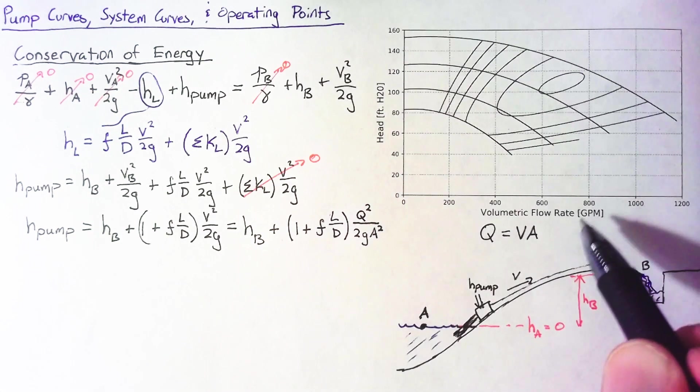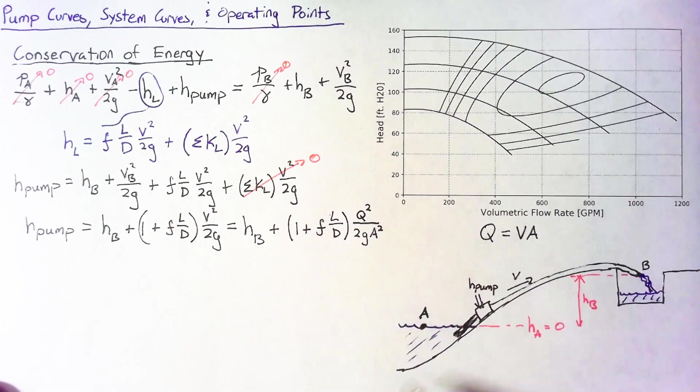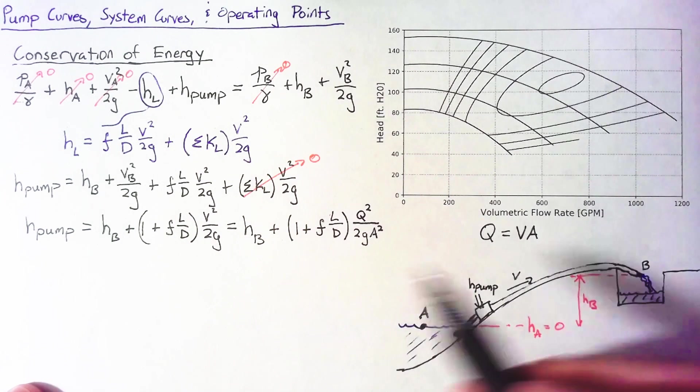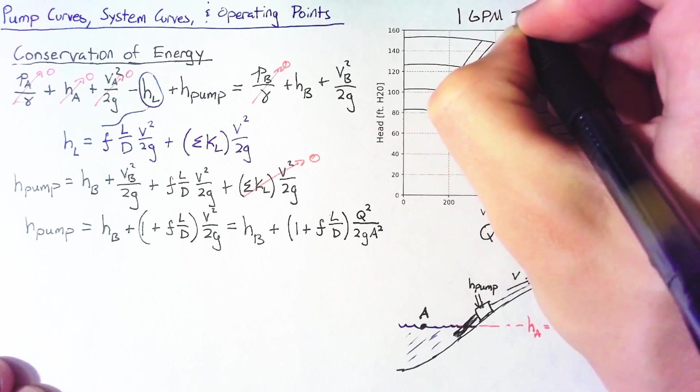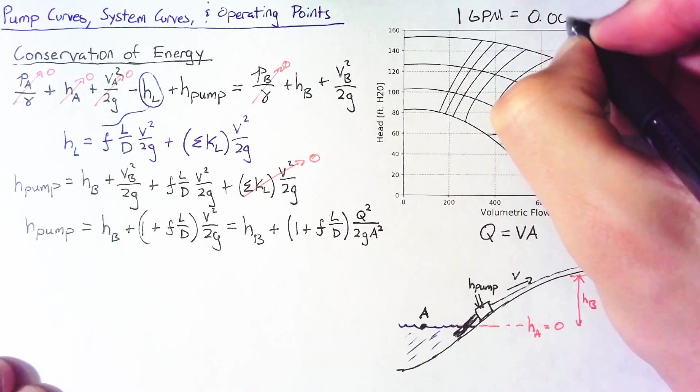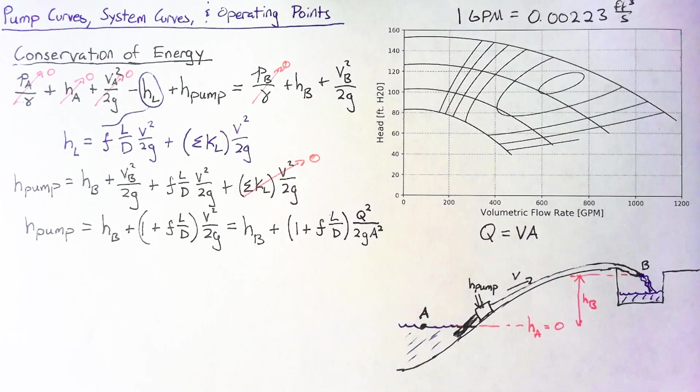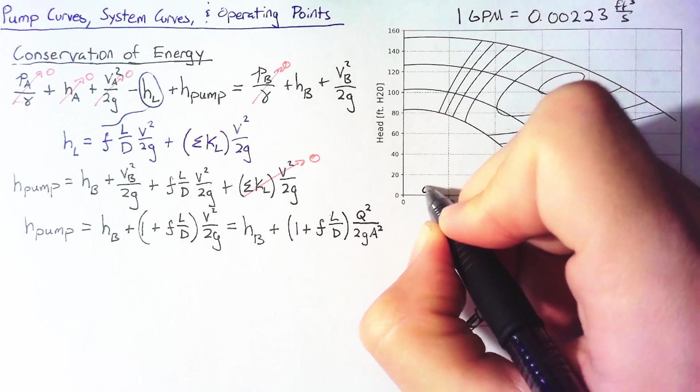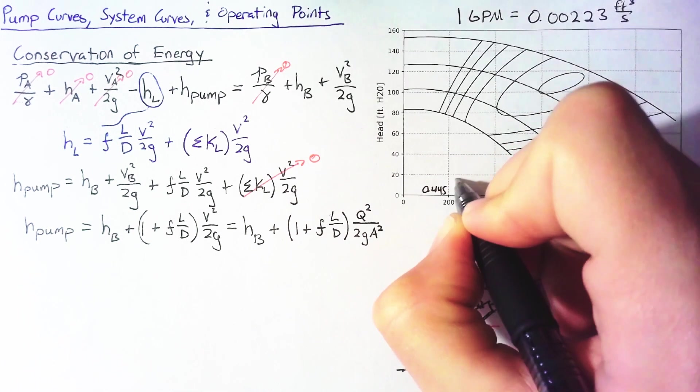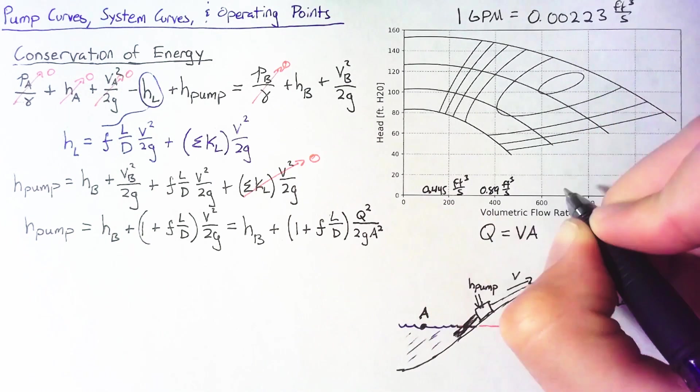The next thing to note is these units. We're talking about gallons per minute and what we normally use for these problems is feet cubed per second. The next thing that we want to do is to convert our gallons per minute into something that's a little bit easier to use. It turns out that one gallon per minute is just about 0.00223 feet cubed per second. I'm just going to write out what each of these values along the bottom are in feet cubed per second. We have 0.445 as our first little tick there. And the rest is pretty straightforward.